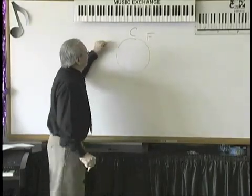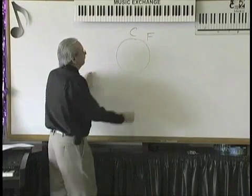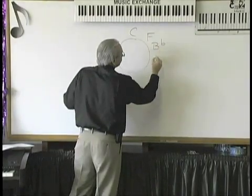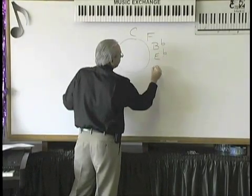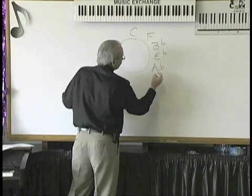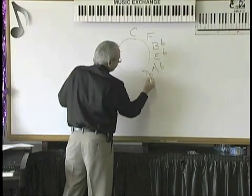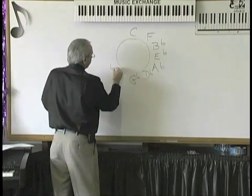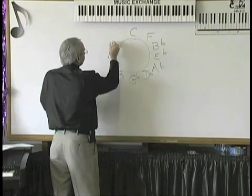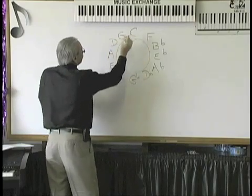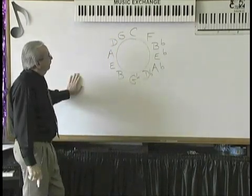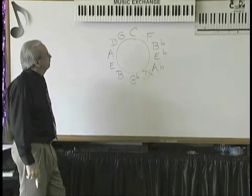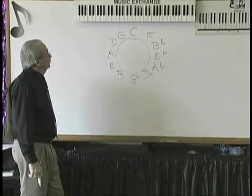Then what does it spell? B-flat, E-flat. Let's say it together — A-flat, D-flat, G-flat, G-flat. B-E-A-D-G and G. The right side of the circle is flats. The left side of the circle is sharps.